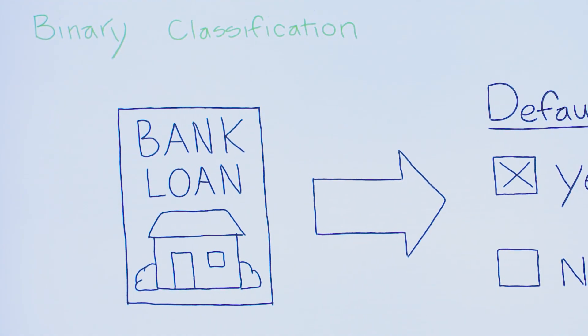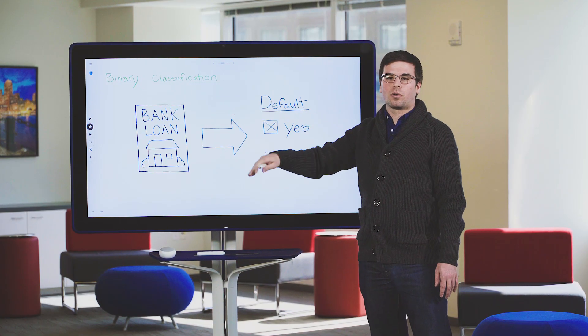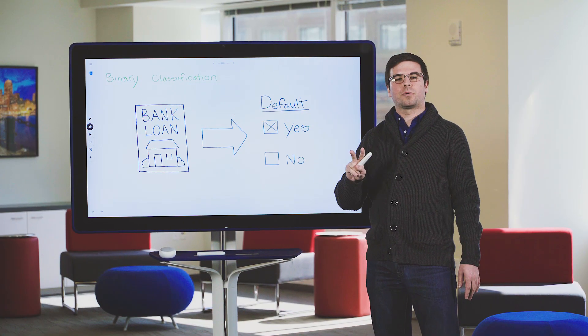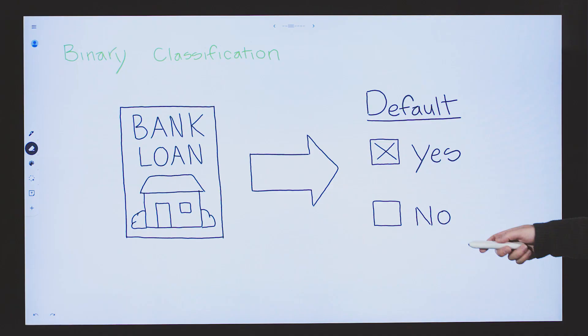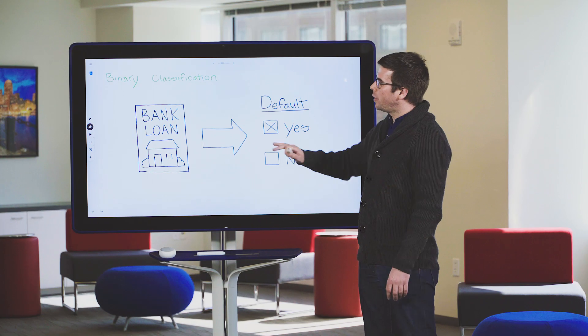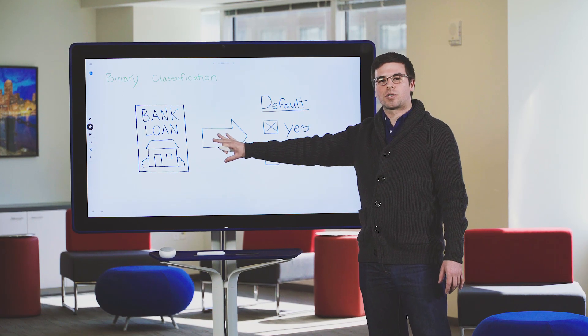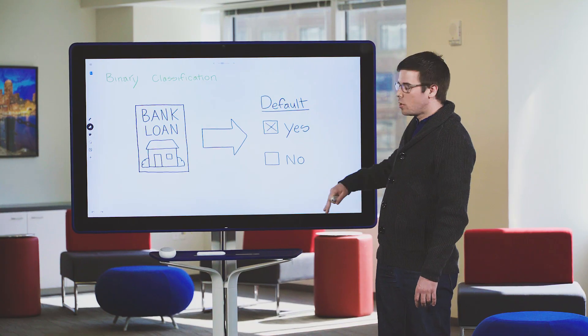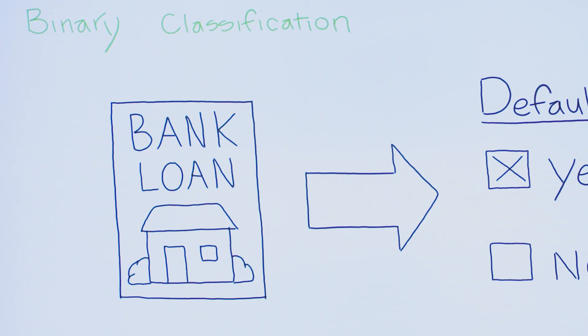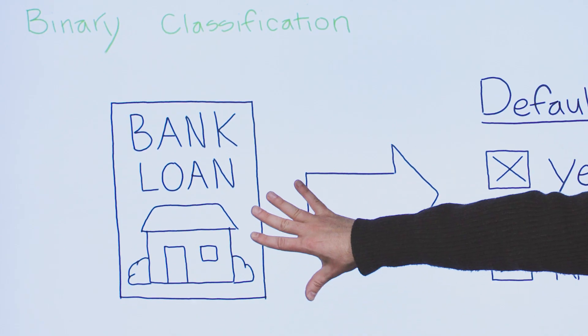For binary classification, it's a subset of classification. With binary classification, there are only two possible classes — this could be yes/no or true/false. A bank will use binary classification when doing its loan underwriting. There are only two possible outcomes: either yes, the loan will default, or no, it won't. A bank is keen to understand the default rates on a loan in order to avoid underwriting bad loans.